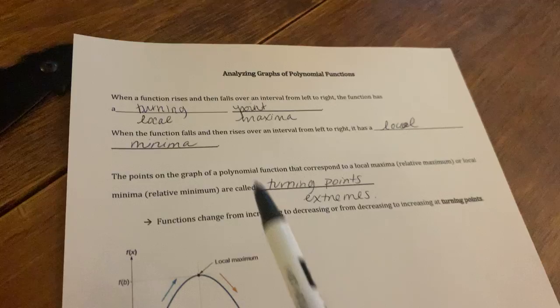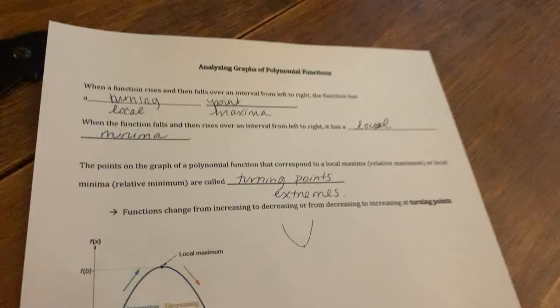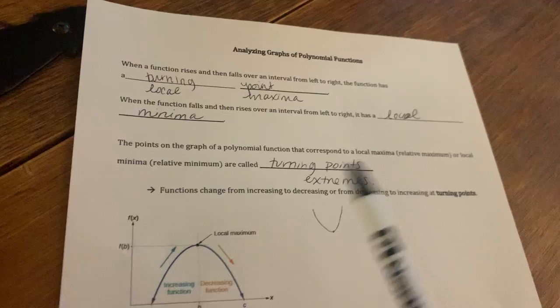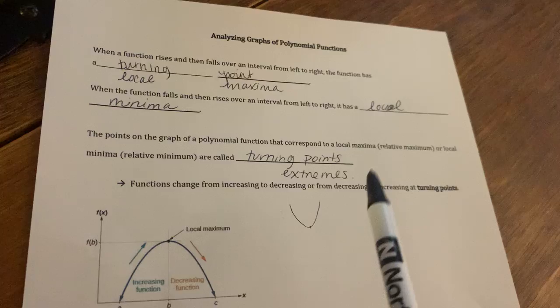When a function falls and then rises, so that would be like this, then this has a local minima or a relative minima. Like I said, it's just depending on your textbook. So the points on the graph of the polynomial function that correspond to a local maxima or a local minima, or a relative maximum or a relative minimum, these are called turning points. I think your textbook calls them extremes or extrema. So that's what it's referring to, the highs and lows.